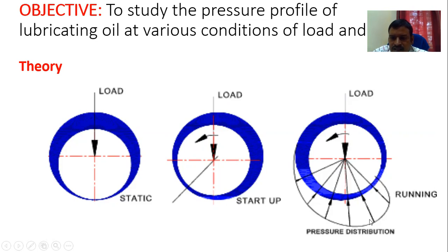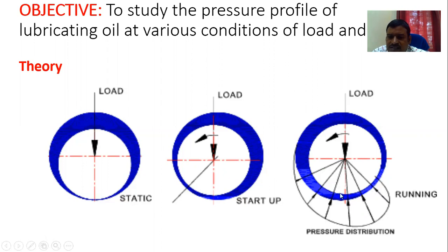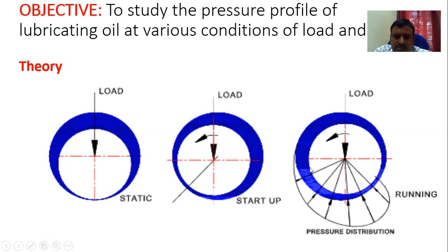At maximum speed, if you measure the pressure profile using the pressure gauge, you will see that pressure is maximum at a certain angle from the vertical axis, and on both sides pressure will be decreasing. This is because the complete journal bearing works on the principle of hydrodynamic action.